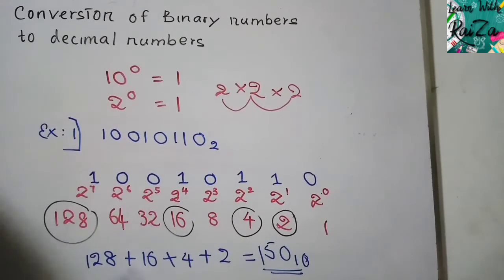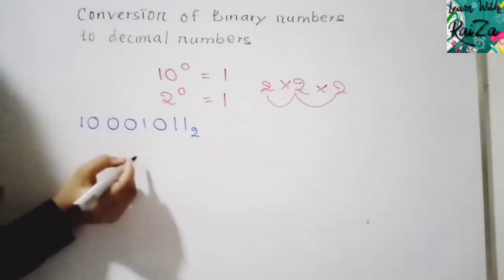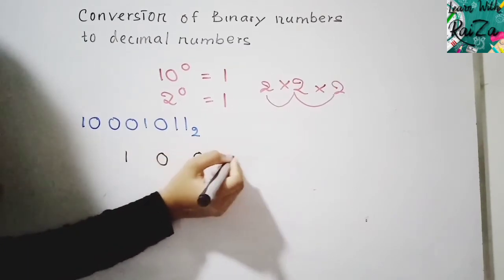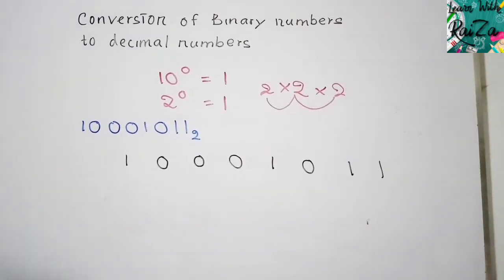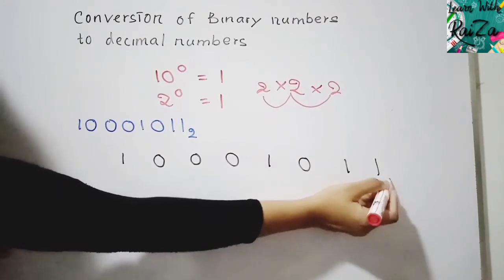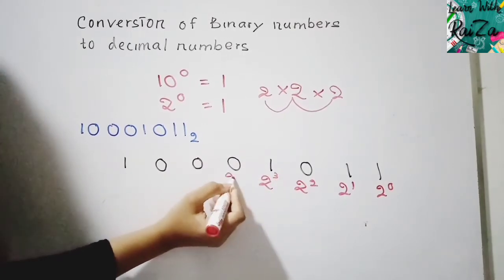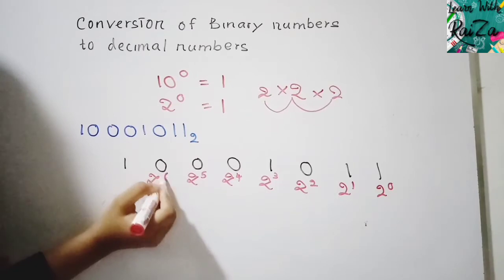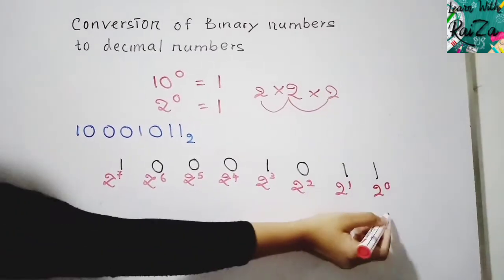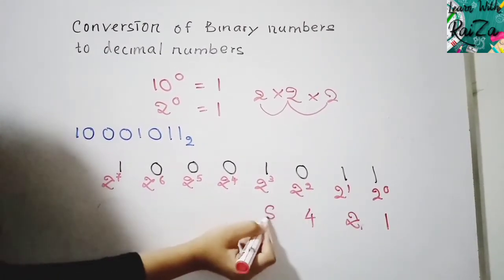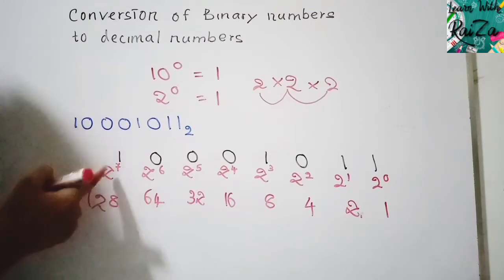Let's do a second binary-to-decimal example. Write out the binary number with gaps and assign powers of 2 from right to left: 2⁰ through 2⁷. The power values are: 1, 2, 4, 8, 16, 32, 64, 128. These powers can extend further — 2⁸, 2⁹, and so on — as the binary number increases in length.